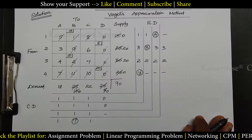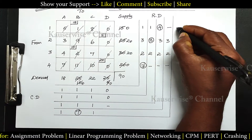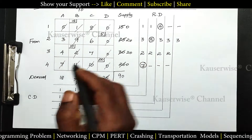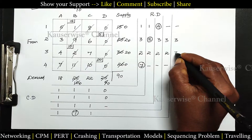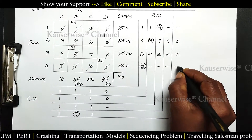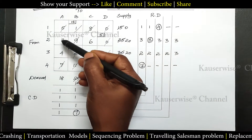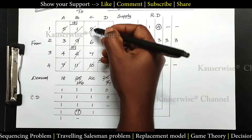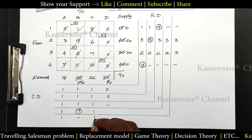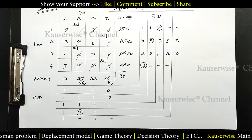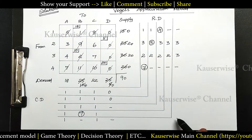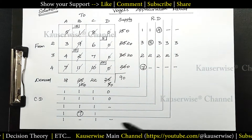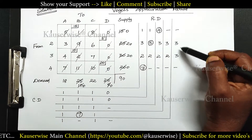Find row difference and column difference again. First row: 0. Second row: 3 and 6, difference 3. Next row: 4 and 7, difference 3. Last row: 0. Column difference: 3 and 4, difference 1; second column: 0; third column: 6 and 7, difference 1; last column: 0. After finding row and column difference, we need to select the highest penalty. The highest value is 3, but it occurs in two different places — this is called a tie.